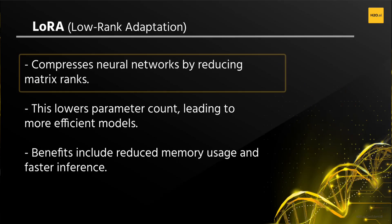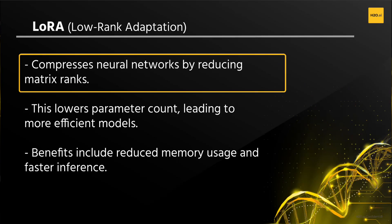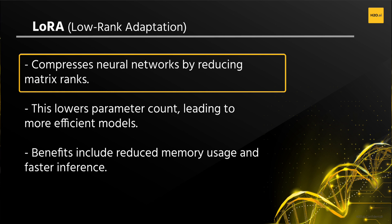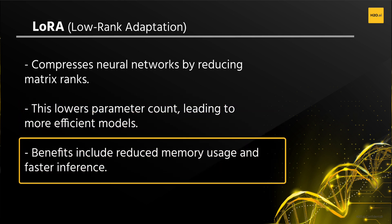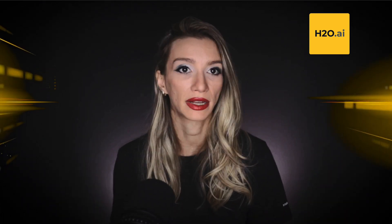On the other hand, LoRA, or low-rank adaptation, is a technique used in neural network compression and optimization. It involves reducing the rank of specific weight matrices in a neural network, effectively reducing the number of parameters in those matrices. This can lead to more efficient models with smaller memory footprints and faster inference times. By reducing the rank of these matrices, the model can achieve a good balance between compression and preservation of accuracy. This technique is particularly useful when optimizing large neural networks with many parameters, as it helps mitigate the computational and memory burdens associated with deploying such models.